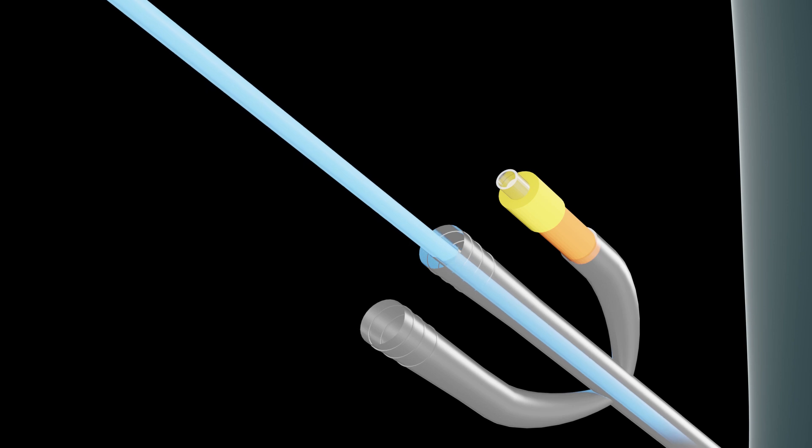The sheath and catheter have outflow ports that align at strategic locations, typically within the prostatic urethra.